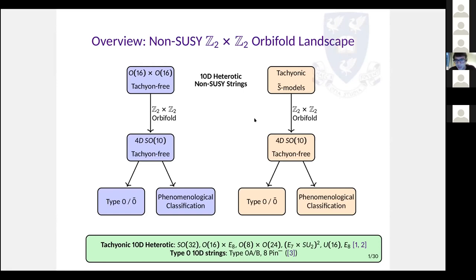Also less well explored are models descending from the tachyonic 10-dimensional heterotic string. We'll look at Z2 cross Z2 orbifoldings of this tachyonic string and consider four-dimensional configurations in which the tachyons are projected. In both cases, we find another interesting group of string theories: the type 0 and type 0-bar models. These are models free of massless fermions and twisted massless bosons, respectively, and we find these interesting configurations in both setups.